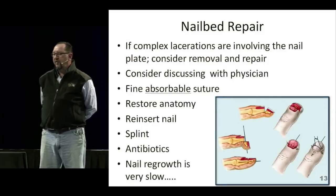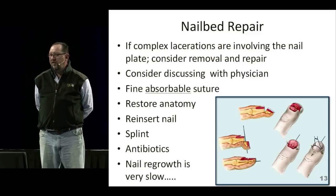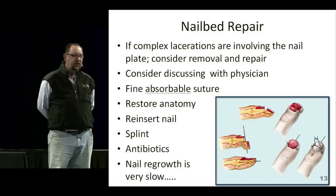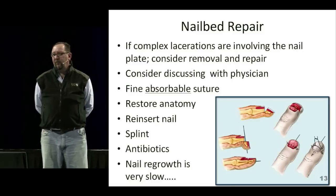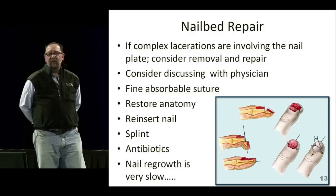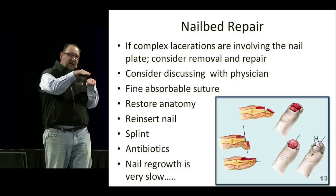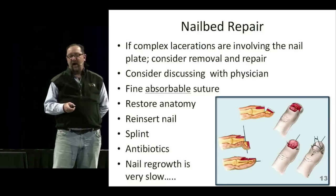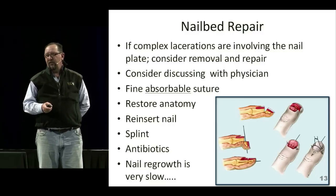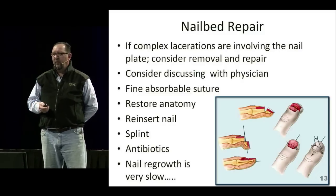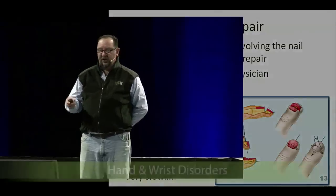Nailbed repair: when there are complex lacerations, there's some practice variation, but if there's a complex nail bed injury under the nail plate, it's worth removing the nail plate, anatomically repositioning the pieces below with sutures, and replacing the nail plate as a dressing. Nail regrowth is slow, and the goal is to prevent the nail from hitting a skin barrier as it grows out and lumping up. Use absorbable suture — typically 5-0 or smaller, though 4-0 works for larger hands with sausage digits.